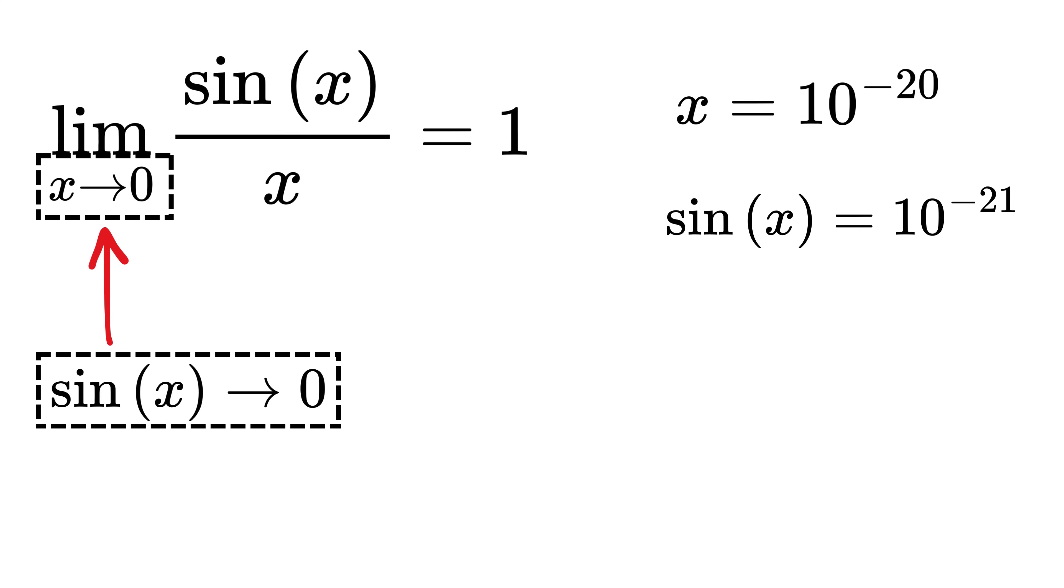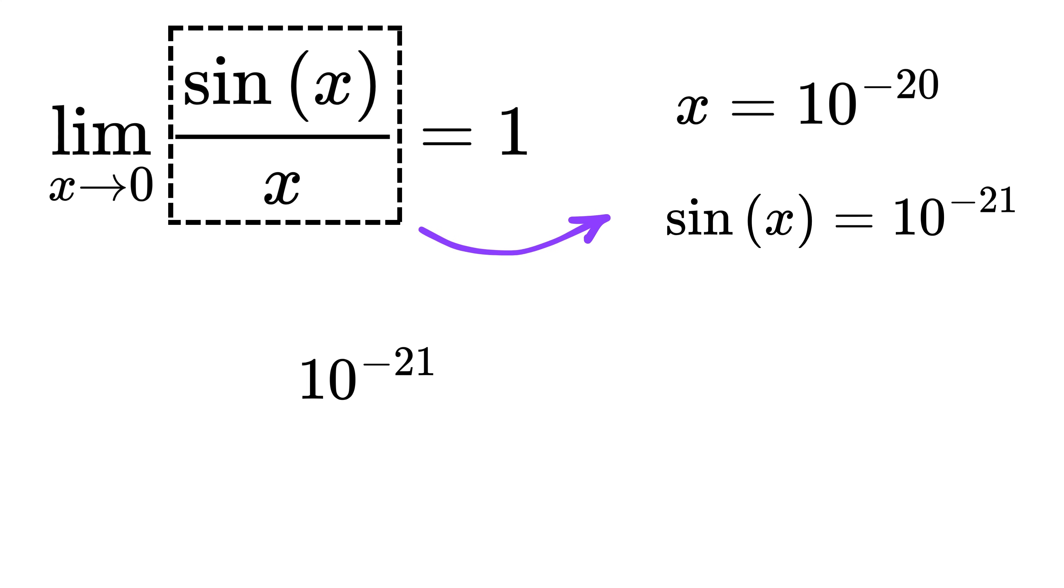Now both are almost zero, right? But when you divide sin(x) by x, you get 10 raised to minus 21 divided by 10 raised to minus 20, and that's 1 by 10, which is 0.1—not even close to 1.